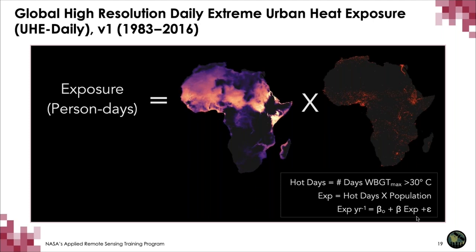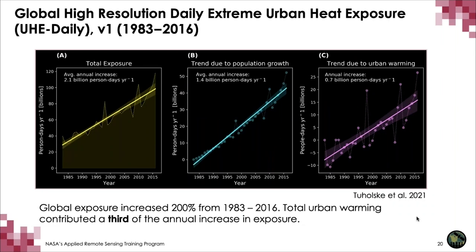Once we fit the trend line, we can look at the average rate of change in exposure — how much hotter a city is getting and how many more people are being exposed per year. These are results from a paper we published in PNAS. We found that extreme urban heat exposure increased approximately 200% from 1983 to 2016, and total urban warming contributed a third of the annual rate of increase in exposure.